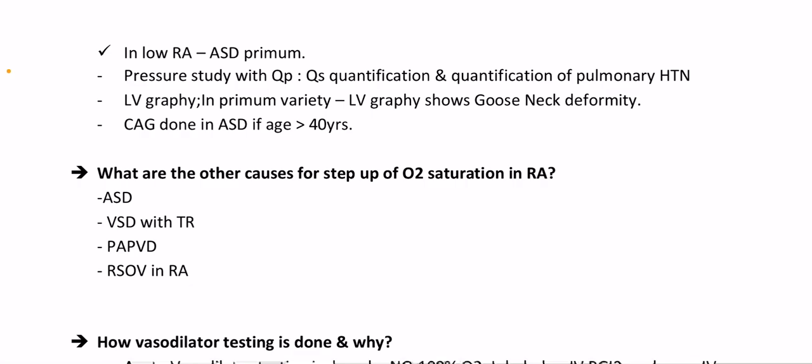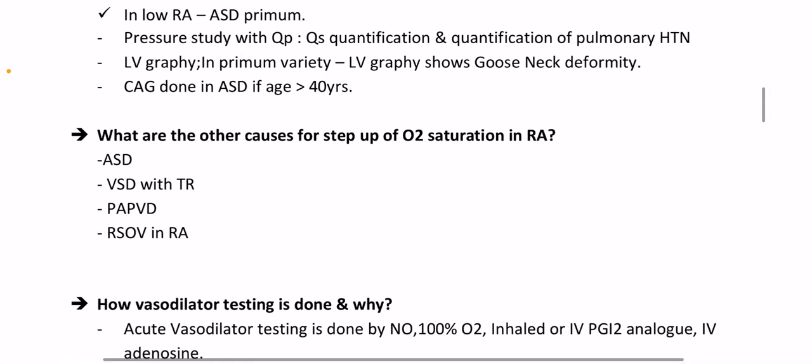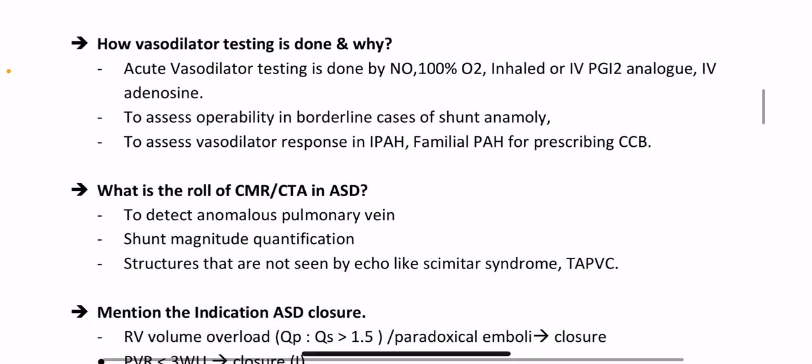Other causes of oxygen step-up in the right atrium: ASD; VSD with tricuspid regurgitation; partial anomalous pulmonary venous drainage (PAPVD); rupture of sinus of Valsalva into the right atrium; and Gerbode defect also causes oxygen step-up in the right atrium.